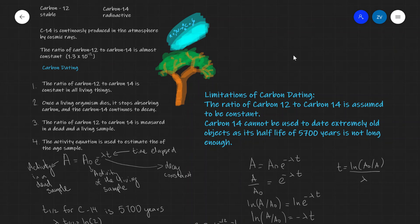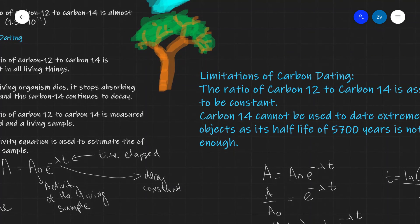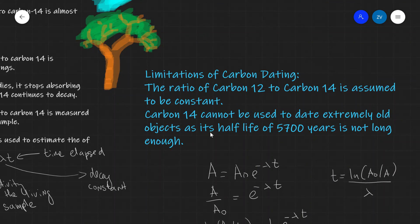Let's look at some limitations of carbon dating. First, the ratio of carbon-12 to carbon-14 is assumed to be constant. In fact, this could be severely affected by fossil fuels, the burning of fossil fuels, and the release of carbon dioxide into the atmosphere. It can also be affected by external events such as solar flares or volcanic eruptions, which might disrupt that ratio.